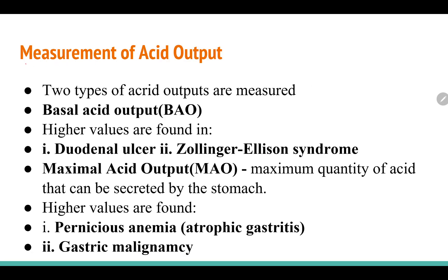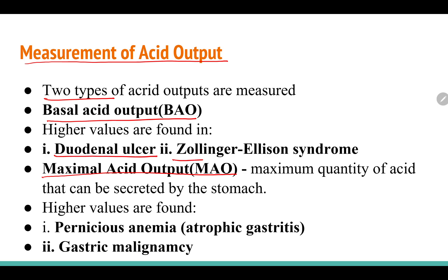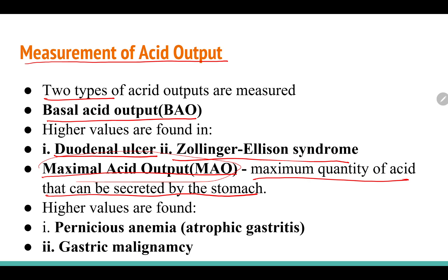Measurement of acid output includes basal acid output (BAO) and maximal acid output (MAO). Higher values of BAO are found in duodenal ulcer and Zollinger-Ellison syndrome. Maximal acid output is the maximum quantity of acid that can be secreted by the stomach; higher values are found in pernicious anemia and gastric malignancy.